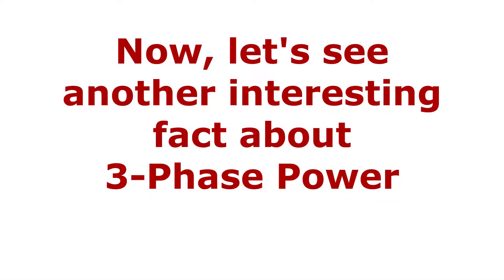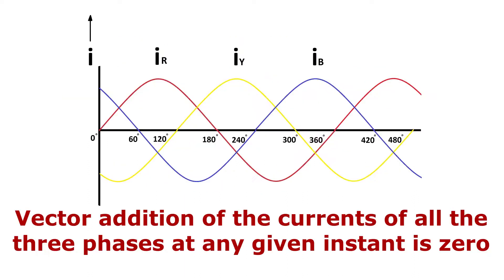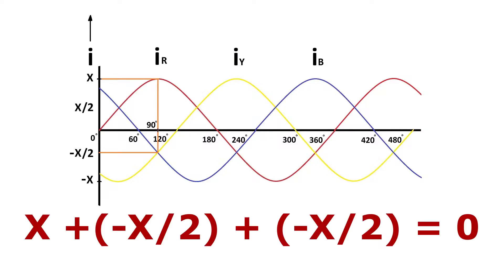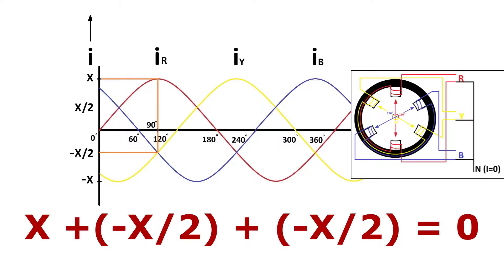Now let's see another interesting fact about three-phase power. The vector addition of the current of all three phases at any given instant is zero. For example, at a 90-degree instant, the value of one phase's current is x units while the value of the other two phases' current is minus half x and minus half x respectively. The addition of all three — x units plus twice of minus half x units — equals zero. Hence, in a balanced three-phase system, the current through the neutral is zero.